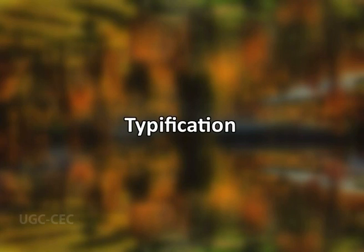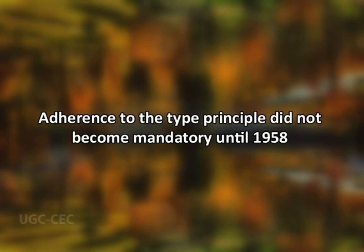Now we see the process of typification. Adherence to the type principle did not become mandatory until 1958. Prior to that time, when taxonomists published a new name, they simply listed several different specimens that exemplified what they meant by the name, without identifying any particular specimen as the top dog among the examples. From 1958 onwards, however, the designation of a type specimen became mandatory, though still it was not fully explicit. It was enough to specify only a few details about a type specimen such as collector's name, collector's number, place and date of collection.